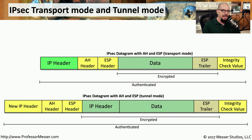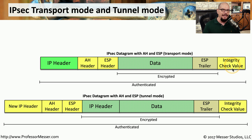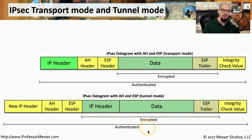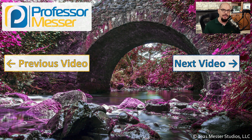Combining both the authentication header and the encapsulation security payload: in transport mode using our original IP header, you would see an authentication header and the encapsulation security payload header along with the integrity check value at the end. More commonly, you would see an IPsec tunnel using tunnel mode along with the authentication header and the ESP header. The new IP header, the AH header, and the ESP header are added to the beginning of the packet, with the encrypted original IP header and encrypted original data inside, and an ESP trailer at the end. From the IP header to the ESP trailer is all encrypted, and the entire packet from beginning to end is authenticated using that combination of authentication header and encapsulation security payload.